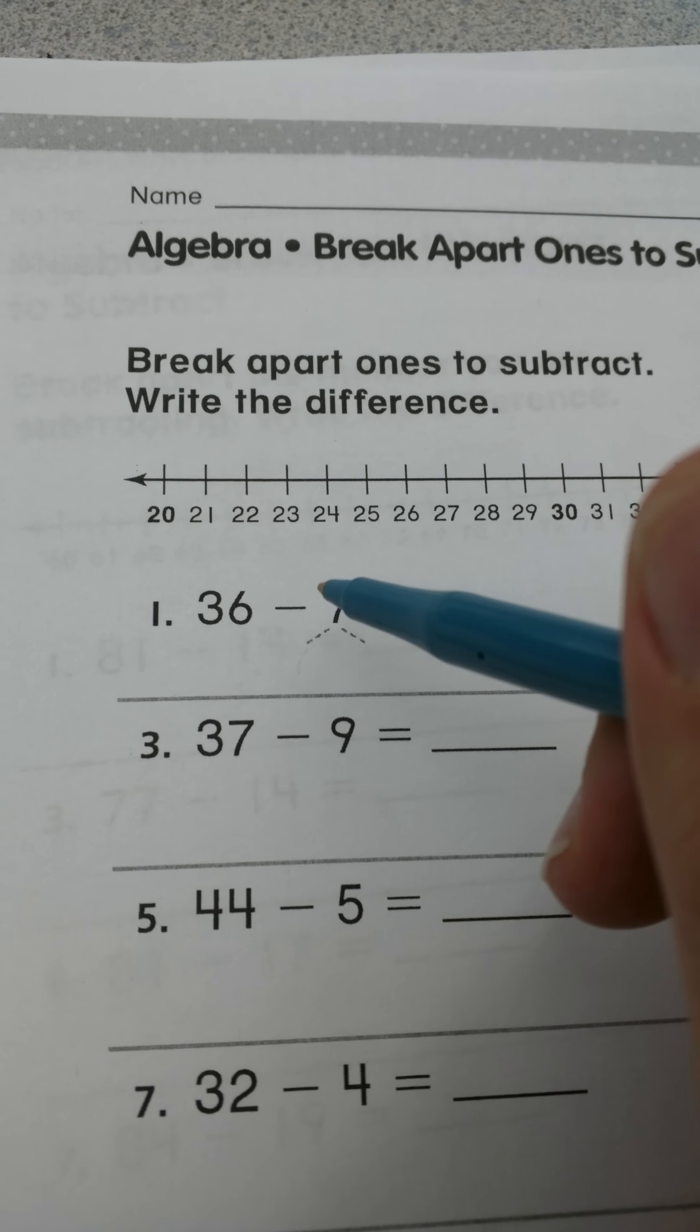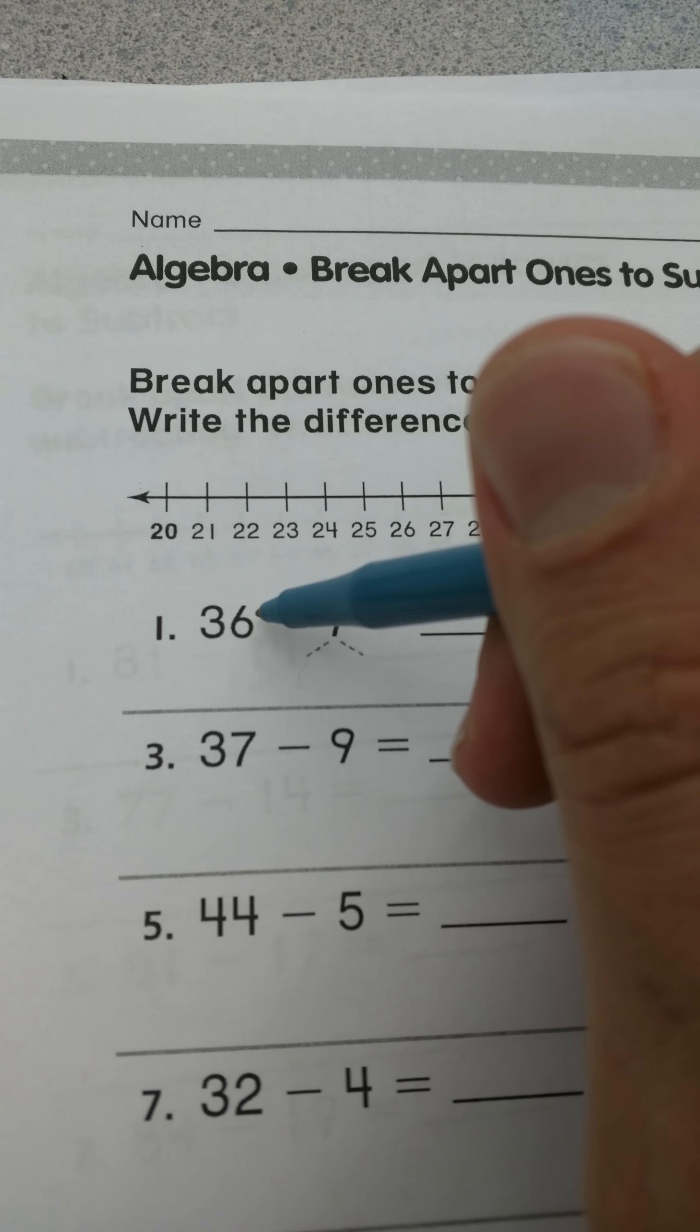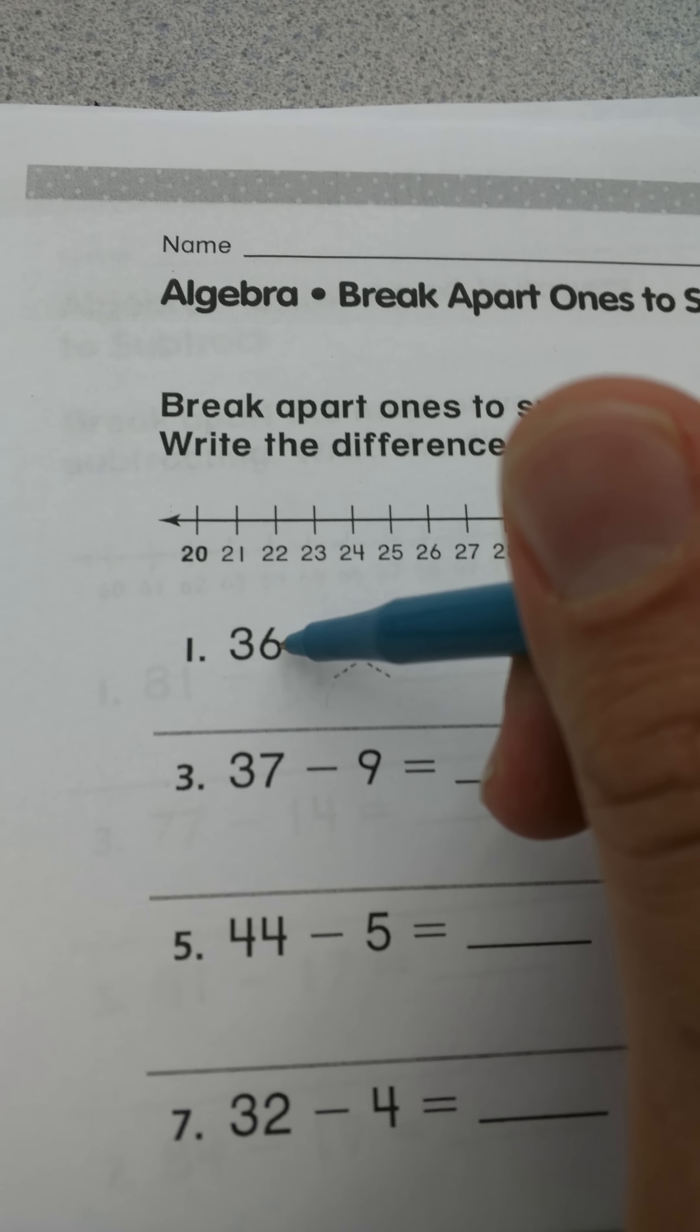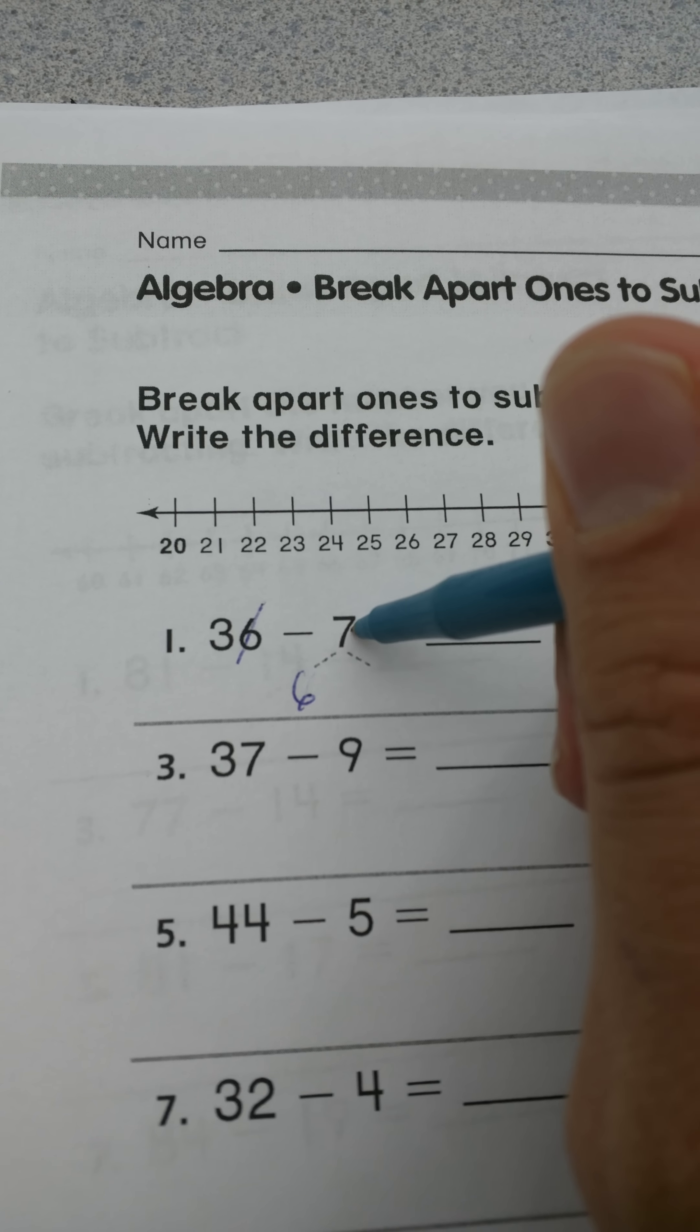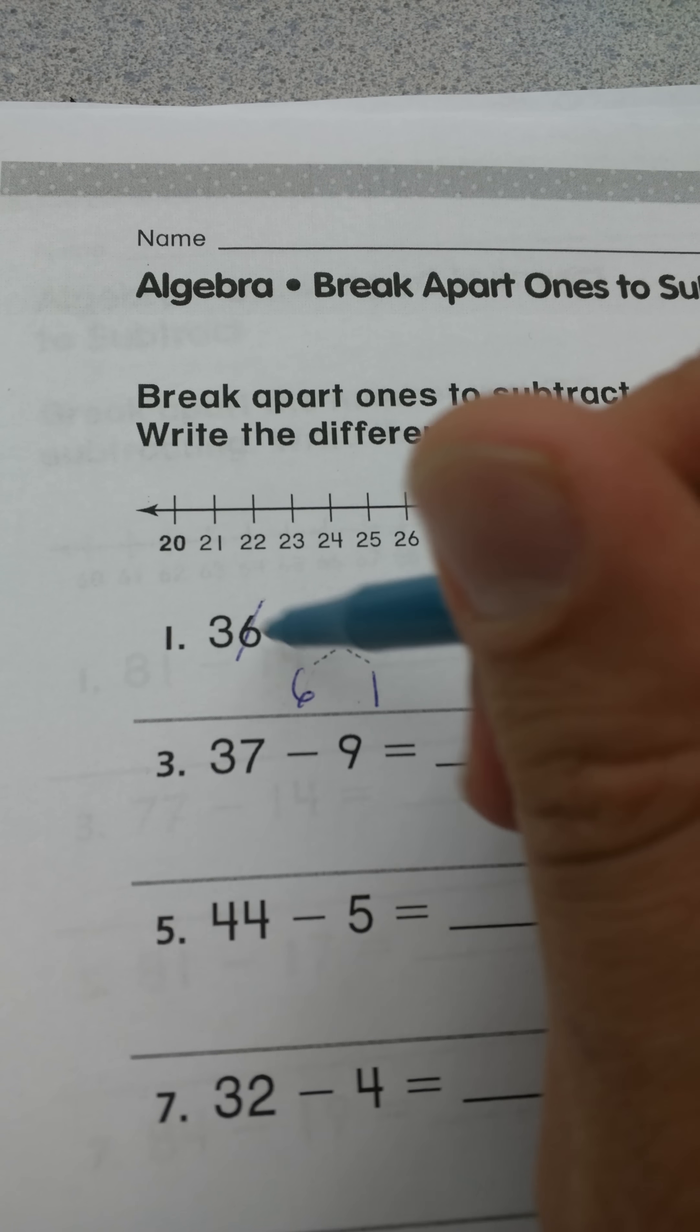So again like we did in chapter I believe it was chapter three, we looked for the ones in the larger number that we're subtracting from and we have six ones here and seven ones here. So I'm going to cross out this six and put a six here because I'm taking away six from seven. I have one left. So six plus one makes seven. I know that's right.